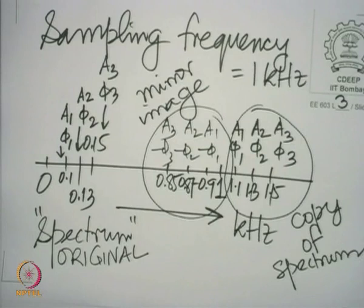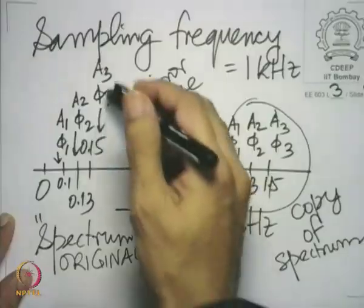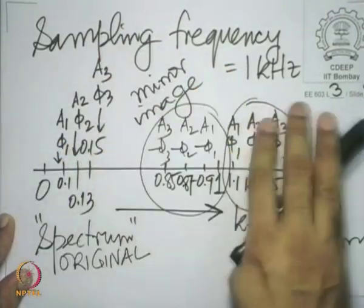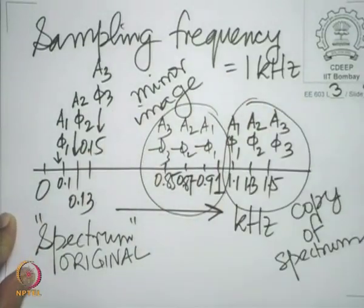Around 2 kilohertz, you have a copy of the spectrum after 2 kilohertz and a mirror image of the spectrum behind 2 kilohertz, with the phase also reversed. So, how do you reconstruct x(t) from xs(t)? If you look at the spectral domain, it is very easy: we need to retain the original spectrum and throw away all the copies and mirror images.